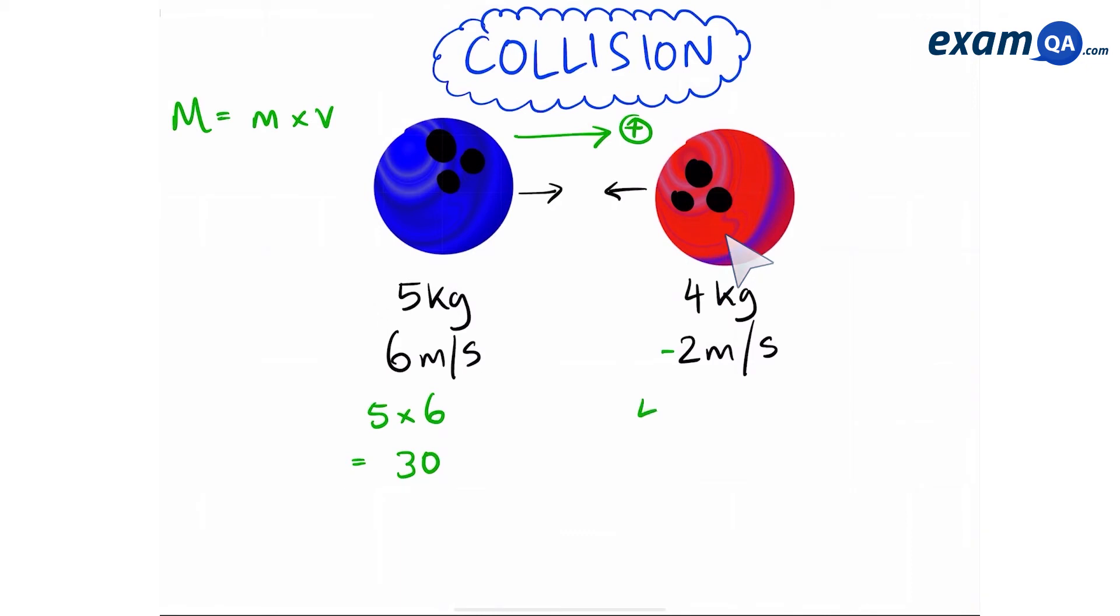The momentum on the right is going to be 4, which is the mass, times by minus 2, because it's going in the opposite direction. That gives us a momentum of minus 8 for the red ball. Now the total momentum is going to be the sum of the blue ball plus the red ball. So 30 plus minus 8 gives you 22.